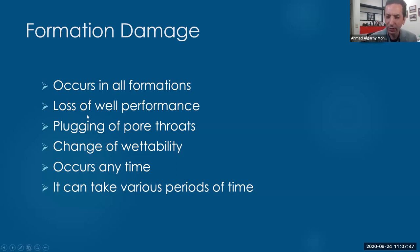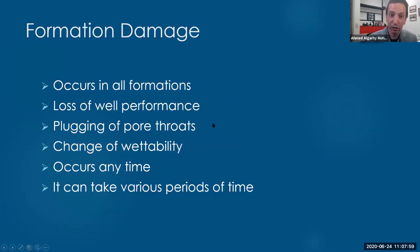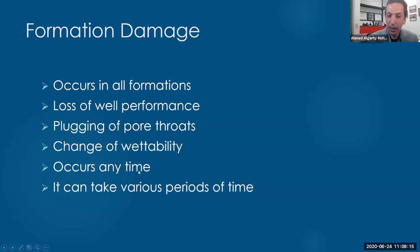So the formation damage is anything mechanically or chemically that damages that permeability - that ability for that oil and gas to get produced. So is the formation damage a disease, symptoms, or a medicine? Based on my definition, it should be a disease. The formation damage occurs in all types of formation - maybe in carbonate formations, maybe in sandstone formations. And I can figure out there is formation damage by noticing a loss of well performance. I used to get 2,000 barrels from that well every day, but today it is only 1,000 or 1,500. So I notice there is a sudden decrease.